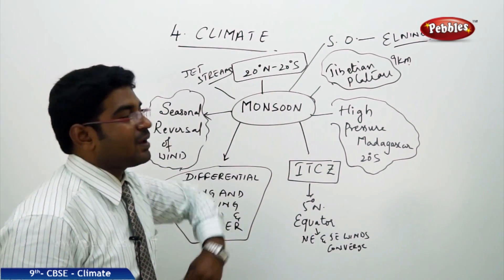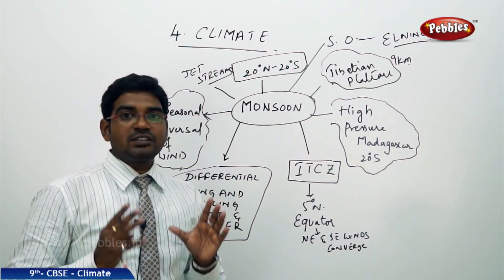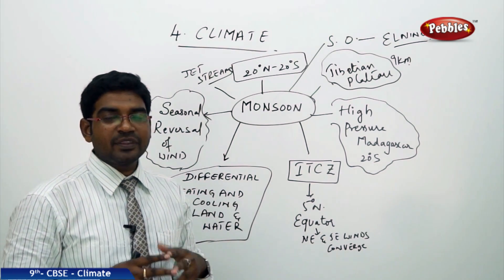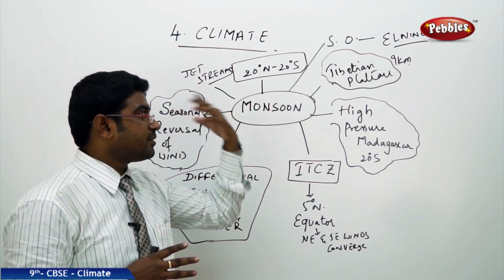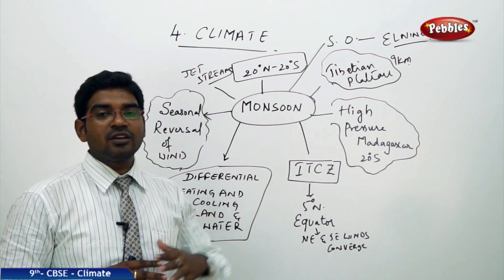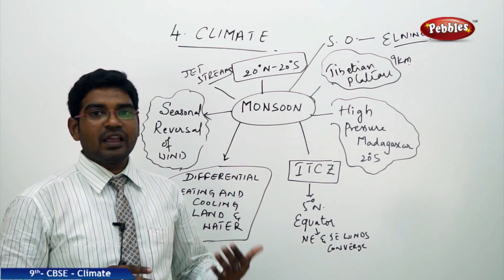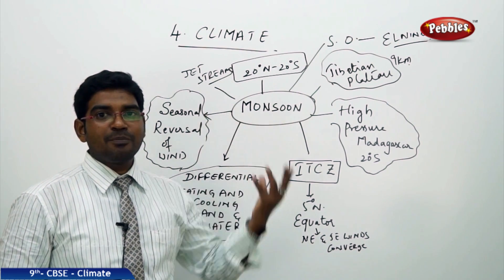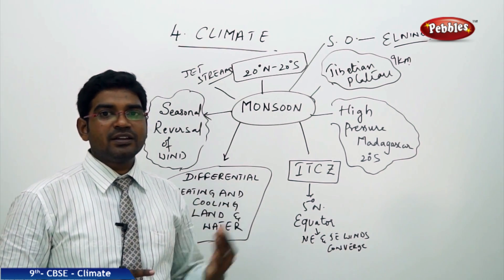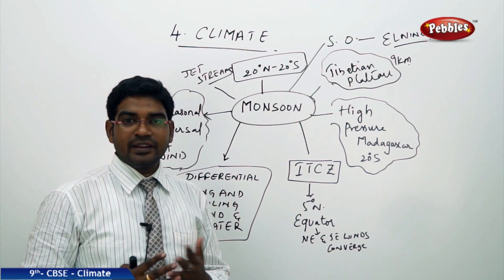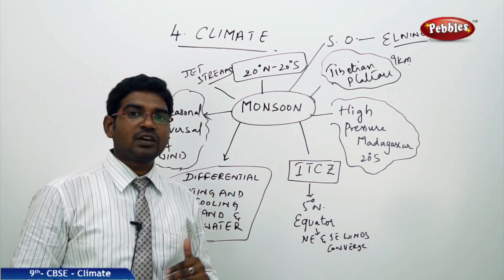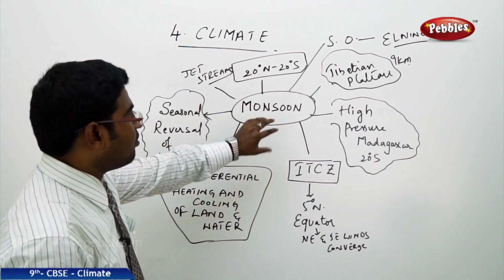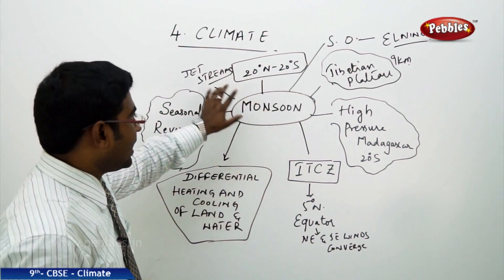The fourth factor is the Tibetan Plateau. In summer, the Tibetan Plateau gets continuously heated and is nearly 9 kilometers above normal land level. Because it is vertically very high and the Indian land is very low, this results in high pressure over the plateau. Warm winds flow down from there towards the Indian side while cool winds move in from this side, which also causes the monsoon effect in India.